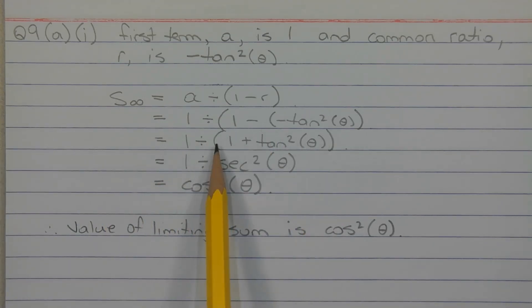Now this is a Pythagorean identity and that's equivalent to sec squared theta. So S infinity equals 1 divided by sec squared theta and sec squared theta is 1 over cos squared theta.